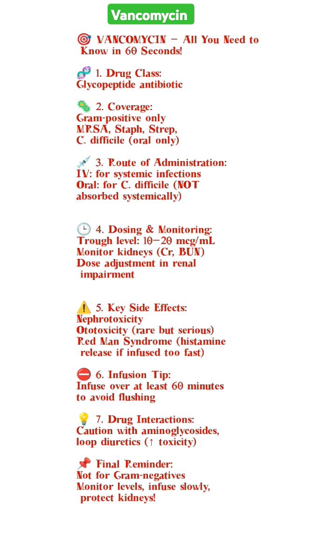IV dosing and monitoring: target trough level of 10 to 20 mcg per milliliter. Monitor kidneys — check creatinine and BUN. Dose adjustment required in renal impairment.